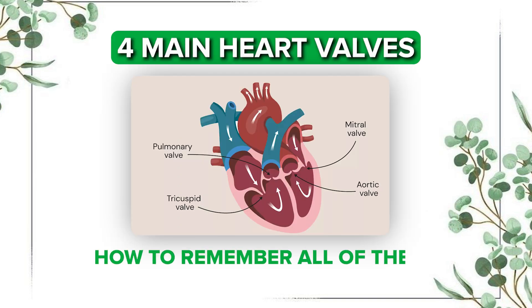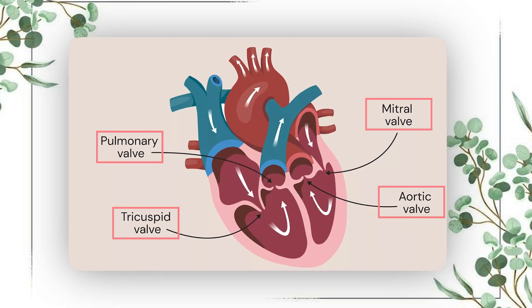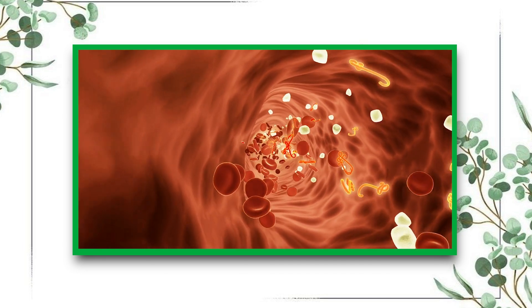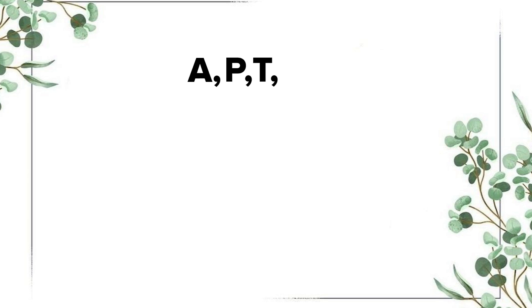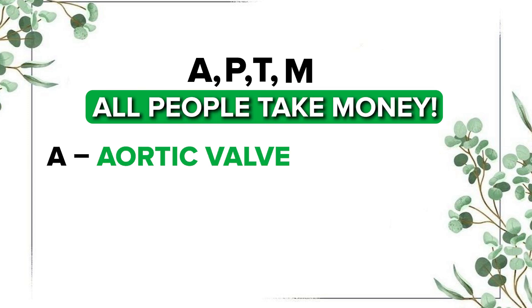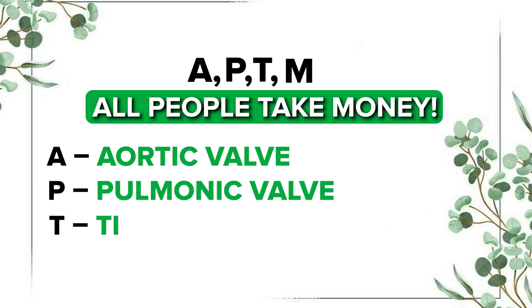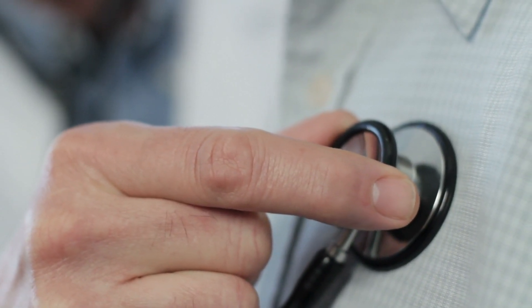The four main heart valves — how to remember all of them? There's a trick. The heart has four main valves that keep blood flowing in the right direction. An easy way to remember is A-P-T-M, which stands for the phrase 'All People Take Money.' A stands for aortic valve, P stands for pulmonic valve, T stands for tricuspid valve, and M stands for mitral valve. This will also help us later when we place our stethoscope to auscultate our heart.